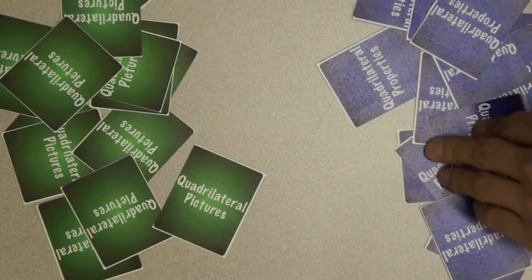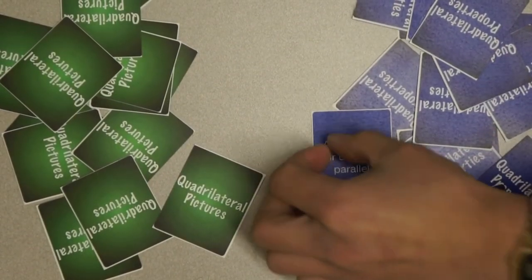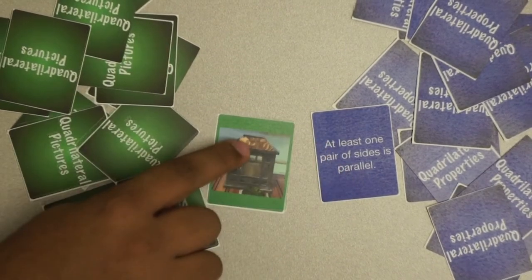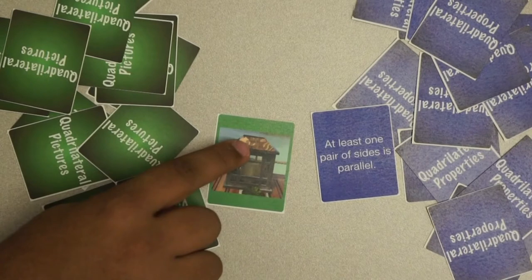As cards are flipped over, players try to match a property card with a picture card. Your goal is to be the first person to slap the cards. Once you slap two cards, you must explain how the quadrilateral property card matches a quadrilateral you see on the quadrilateral picture card.